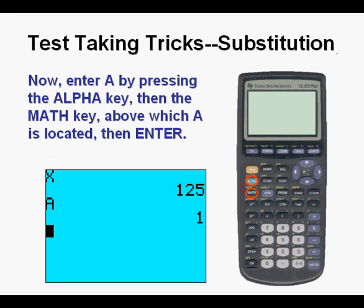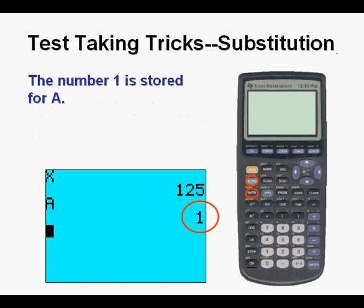Now enter A by pressing the alpha key, then the math key above where the little green A is located, then enter. We can see the value stored in my calculator for A, and that is the number 1.